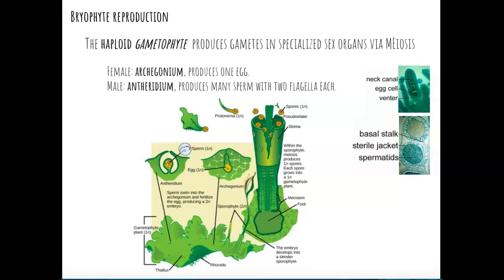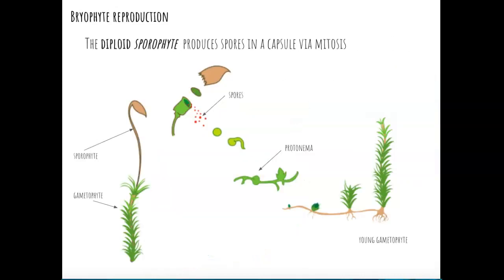The antheridium produces sperm and releases them; they use the moist environment to swim toward the egg cell. After the sperm fertilizes the egg, that embryo develops into a sporophyte, which is capable of producing spores. The sporophyte is a diploid structure that grows out of the gametophyte. It produces spores in a structure called a capsule. Those spores are then released and settle away from the original gametophyte, beginning to create a new gametophyte. The first part of a new bryophyte to develop is called a protonema, from which the rest of the plant develops.